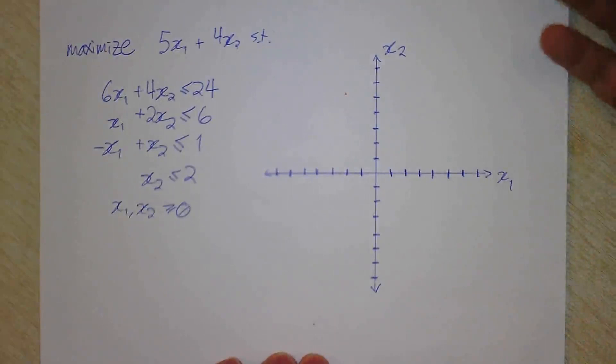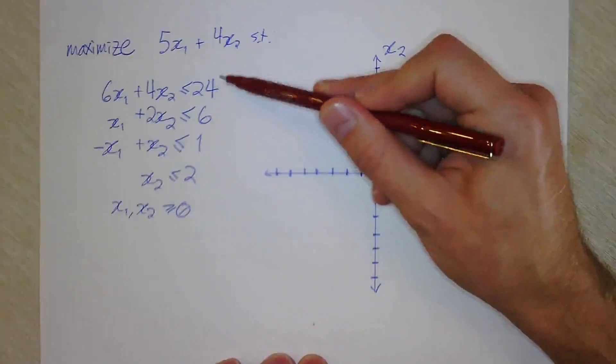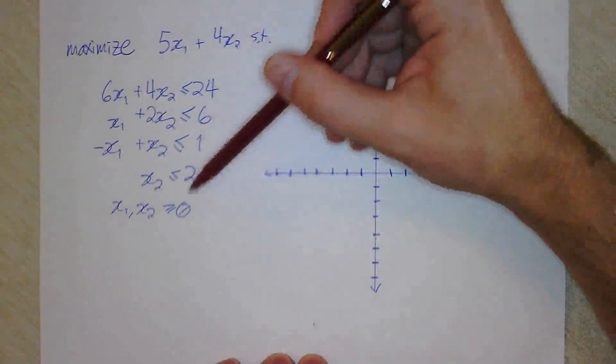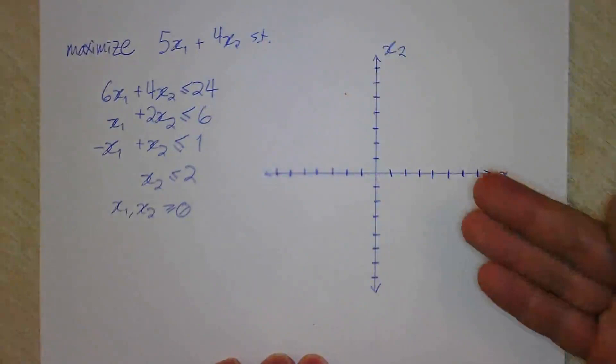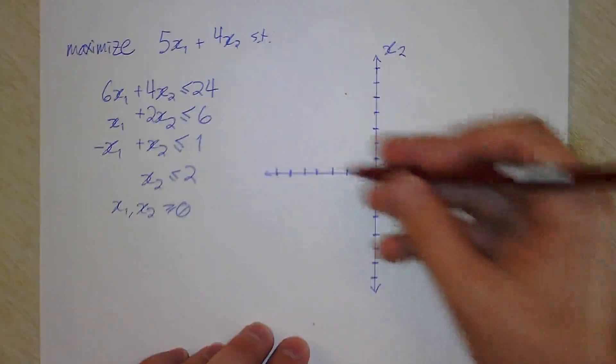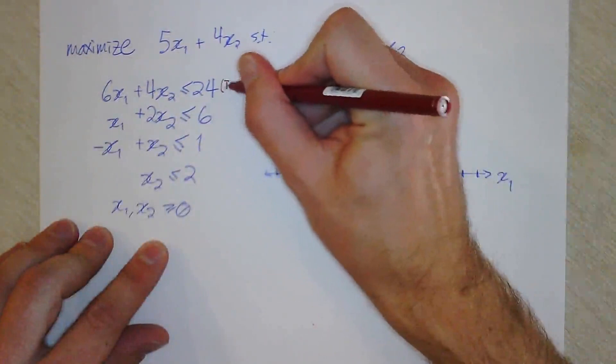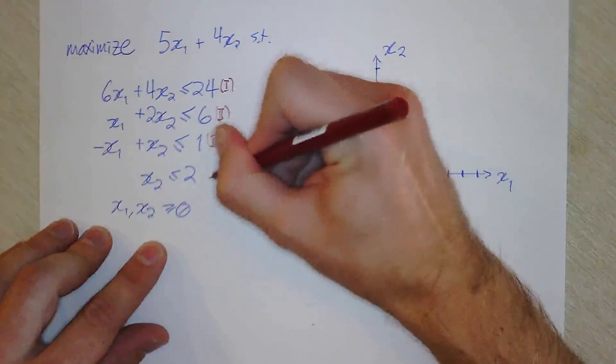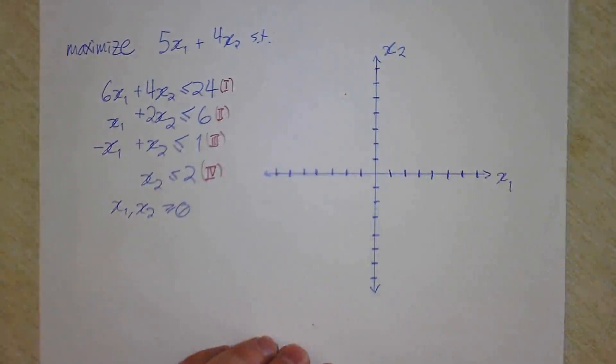The first step in using the graphical method to solve a linear program is you draw your feasible region. We're going to draw, in these axes, the shape that is defined by these constraints. It's going to be a polygonal shape because these are all linear inequalities. You take each one of these constraints one by one, and I'm going to label them — Roman numeral I, II, III, and IV — that'll be useful later for when we need to recover the actual solution.